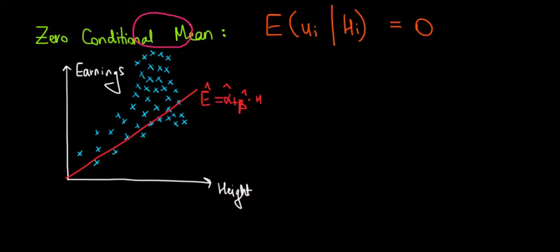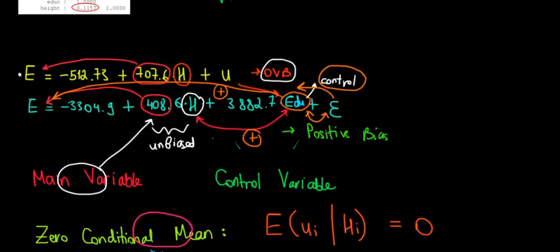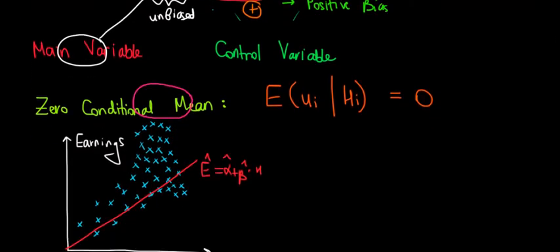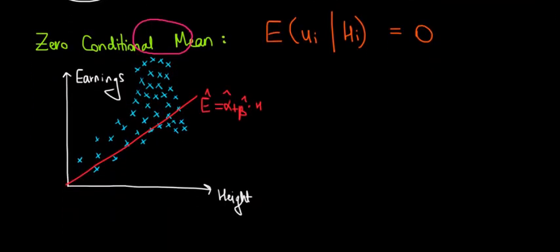What does this tell us? This is based on the initial regression assuming that we have only height in our model. So what this is telling us is that the error term is random.